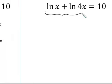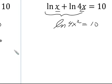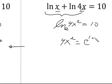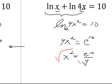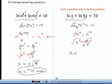Using the shorter method on the same problem: condense using the expanding/condensing properties — since it's addition with the same base, rewrite as one natural log with the 'of parts' multiplied. Then simply rewrite in exponential form: 4x squared equals e to the 10th power. Divide out 4, take the square root of both sides with plus and minus. The negative root is extraneous, so only the positive root is the final answer.